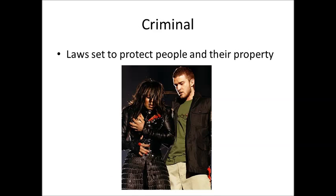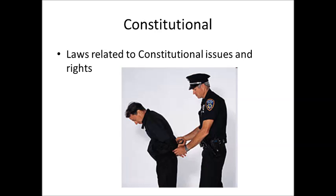The next-to-last type is criminal law — that's when people break laws that are trying to protect people, their property, and maintain their safety. A law has been broken in criminal law. The last type is constitutional law, and that's when a legal action or a law is related to a constitutional issue or a right that's been violated. That's it for the video — see you next time.